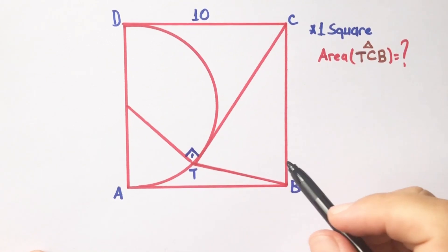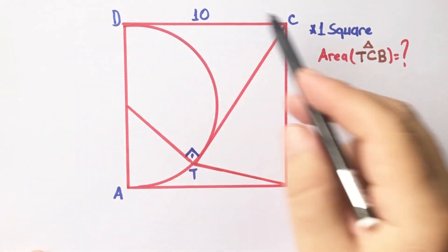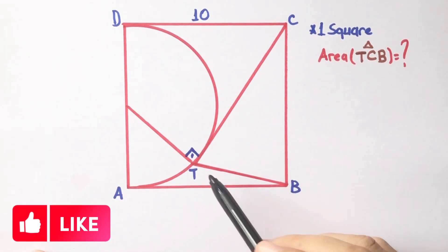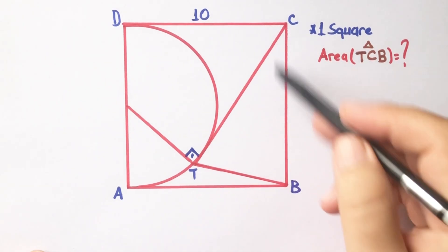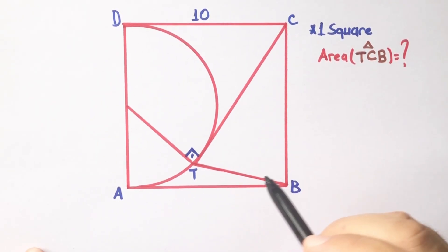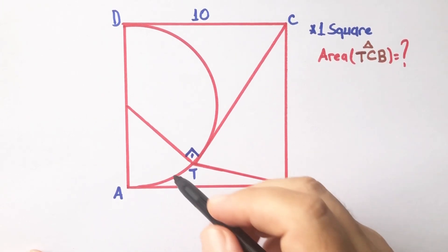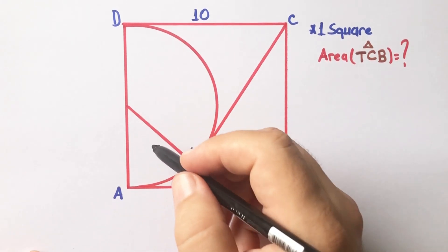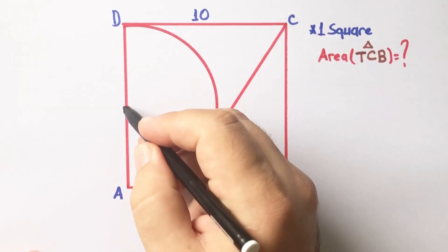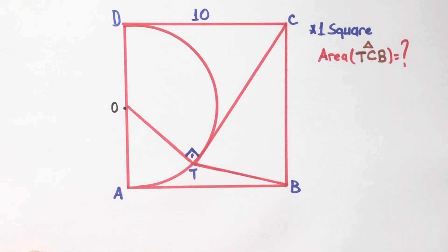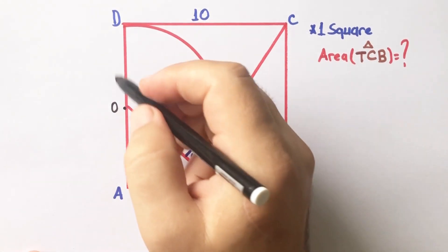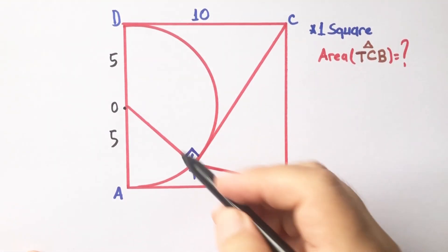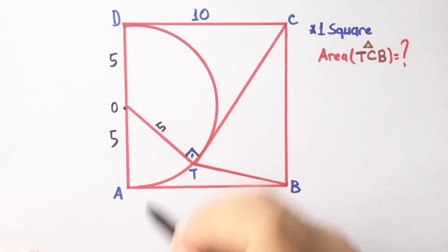Hello everyone. In this video you have one square, one inscribed circle, and one triangle. The area of this triangle is what we need to find. Since the line is tangent, it was drawn from the center of the circle, so here must be the center. These sides are 5 units because of the square, and this length is also 5 units.